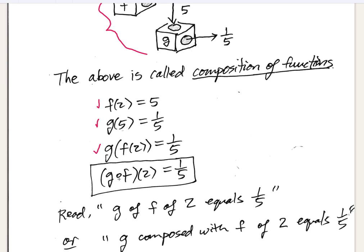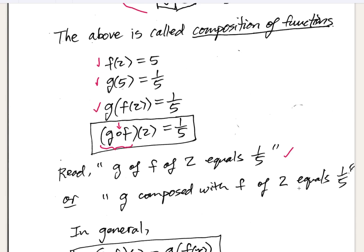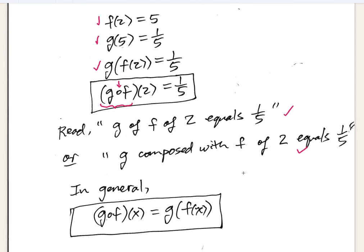Instead of writing it as g of f of 2, sometimes people write it with a little composition symbol — a little open dot between the two functions. So this would be g composed with f of 2 equals 1/5. In general, g composed with f of x is just g of f of x. That is the meaning associated with that new symbolism.